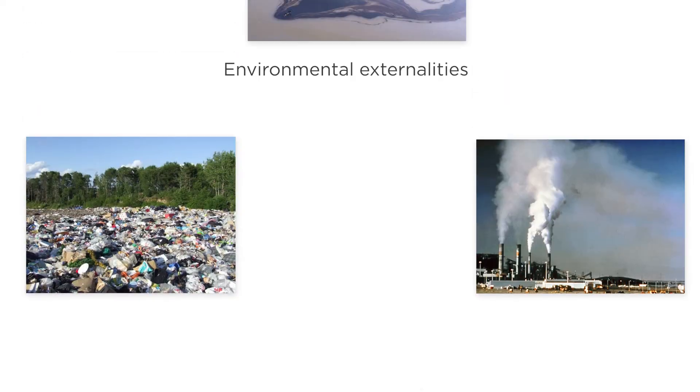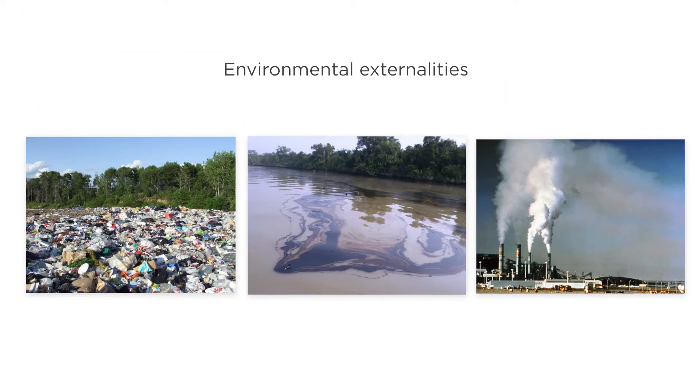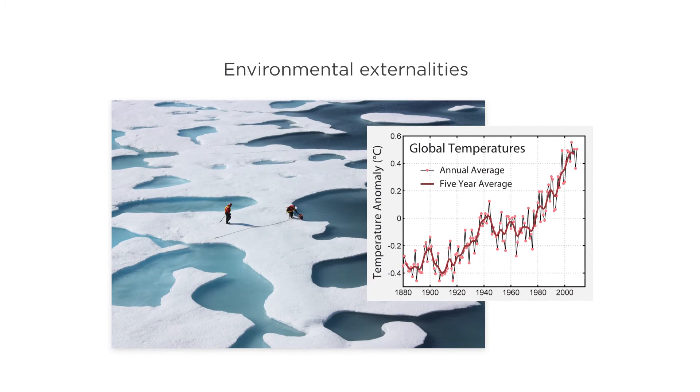As we think about more examples of externalities, we begin to see how widespread they are and how much scope there is for possible government intervention. For example, there are many environmental externalities that affect our air, land, and water. The most important of these in the long run is global climate change.